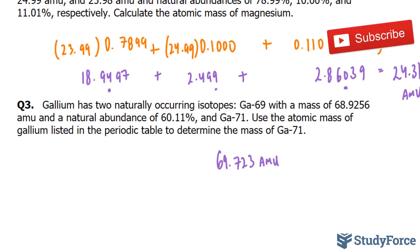Let's set up a mathematical equation here. We know that we have to convert this percentage into a decimal, as was the case in questions one and two. So converting this into a decimal, we move this decimal place two to the left. We end up with 0.6011, and we'll multiply that number by its amu, which is 68.9256. Next, we focus on the other isotope, gallium-71.